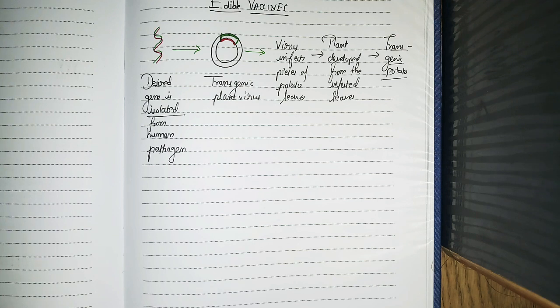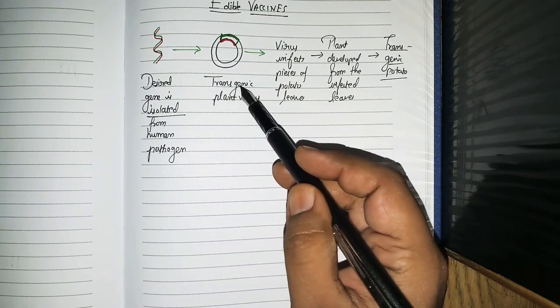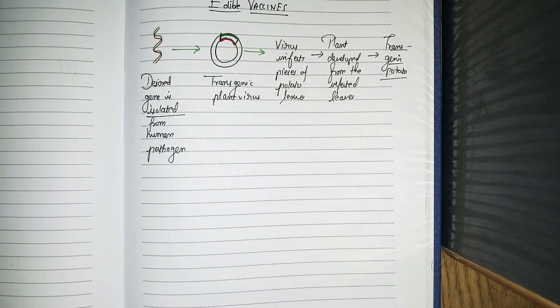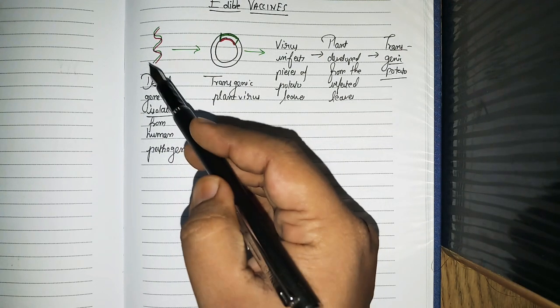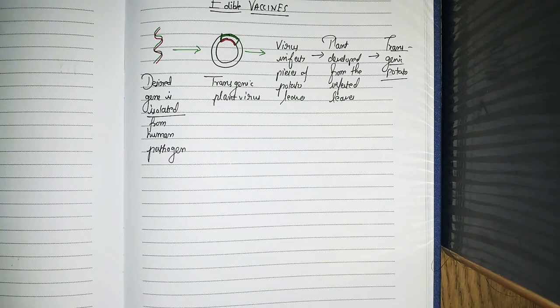That is that gene, and then we put that gene, we incorporate that gene in plant virus. This is a nucleic acid of the plant virus, and then we integrate that particular gene into its genome.